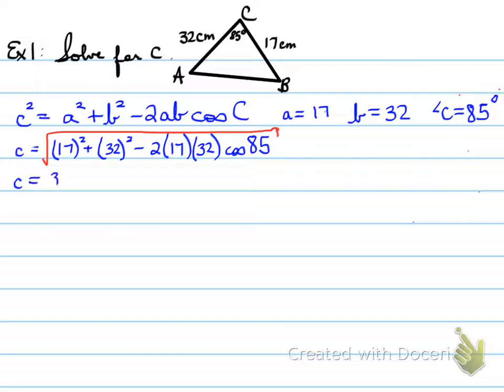So we get rid of the square, and we change it to a square root. Well, we take the calculator, and we take the square root of that whole entire value, and we get 34.9024 centimeters. That is the value of C to four decimal places.